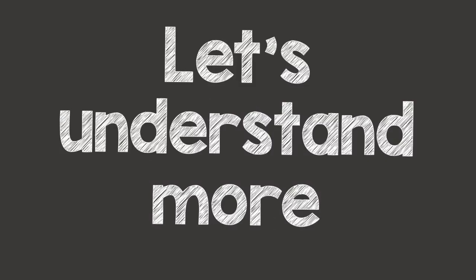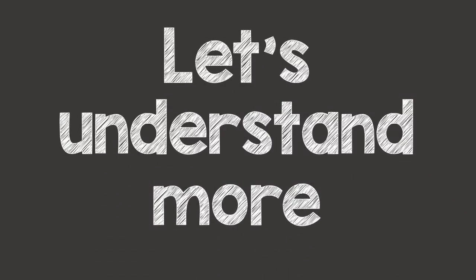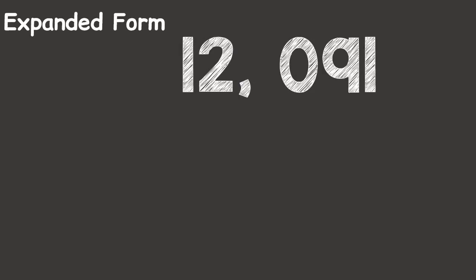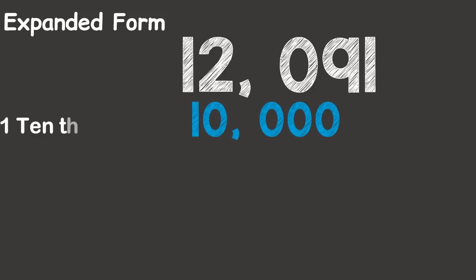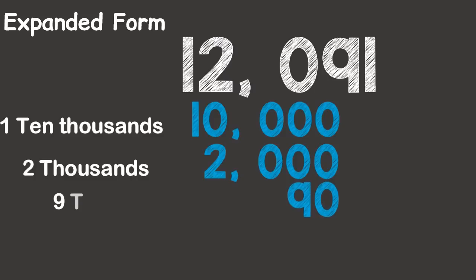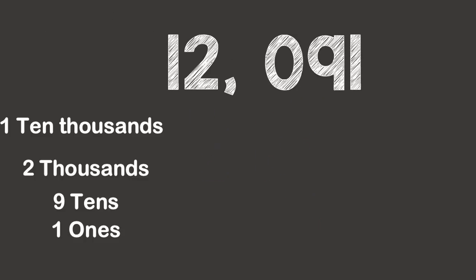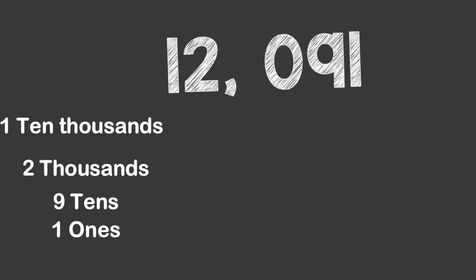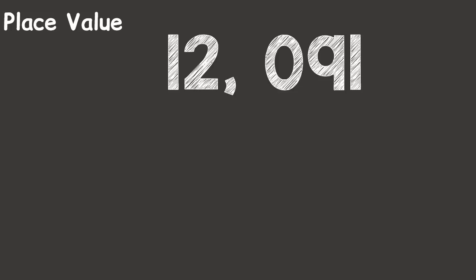Let's understand more. In 12,091, we have 1 ten-thousand, also we have 2,000, we have 9 tens, and we have 1 one. That equals 12,091.